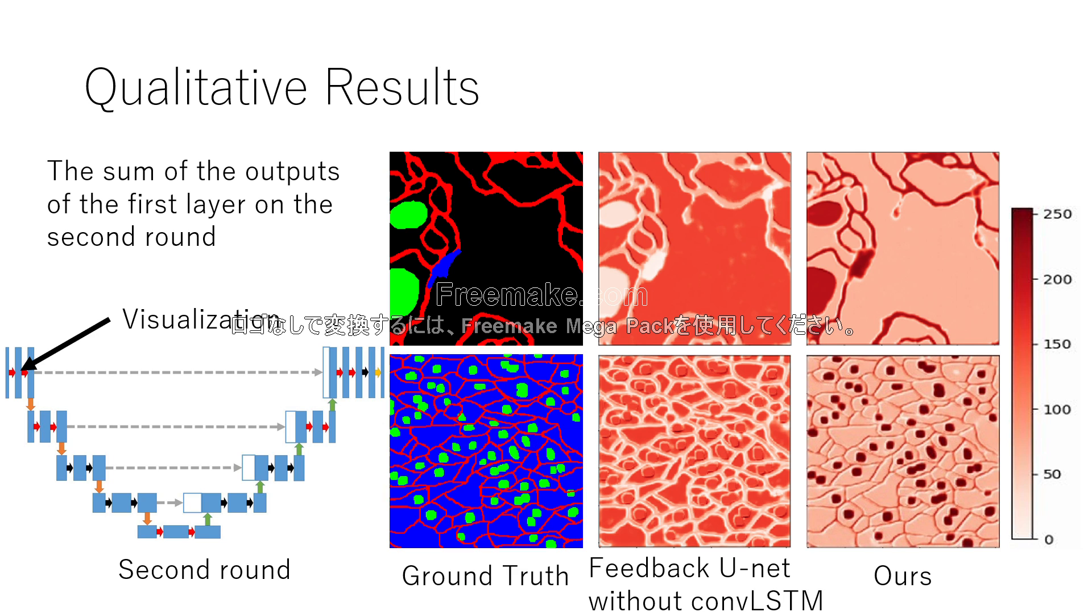However, it turns out that our approach can extract the feature map highlighted with cell membrane, nucleus, mitochondria, and synapse. According to these results, we considered that our approach complements the features of object class, not background in the second run.